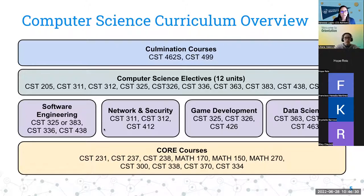Besides concentrations, students complete 12 units of computer science electives. These options allow you to explore another concentration area if you have interests in two areas. For example, if you're in software engineering but want to take network security classes, those can count toward your elective requirement.